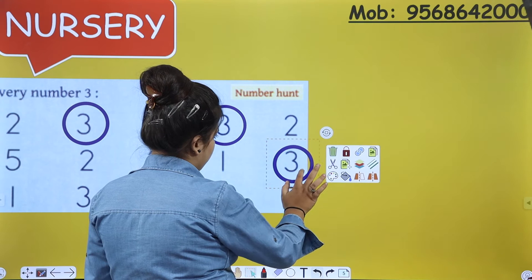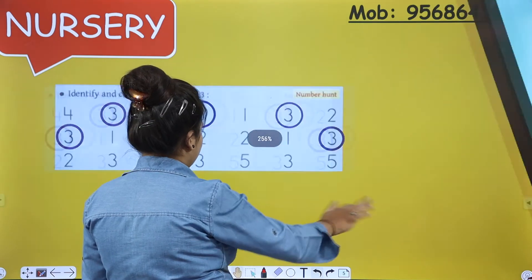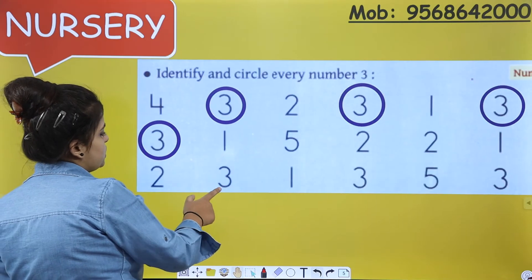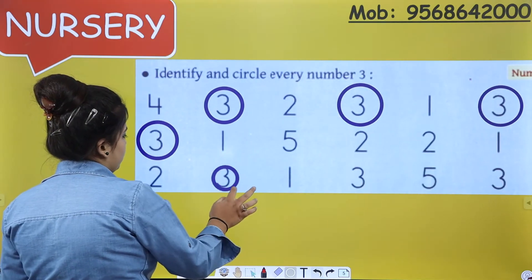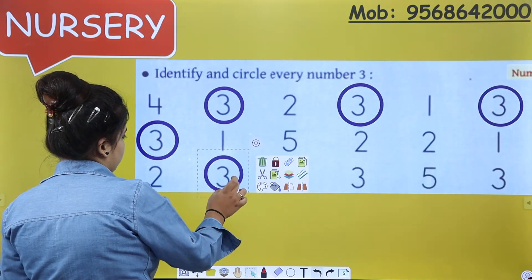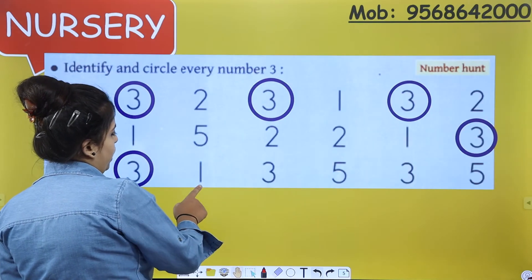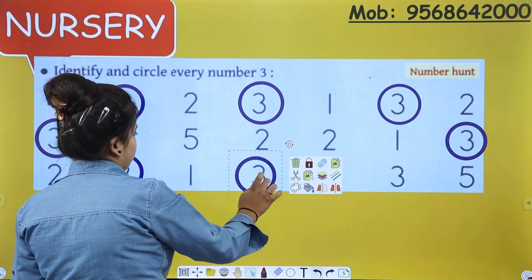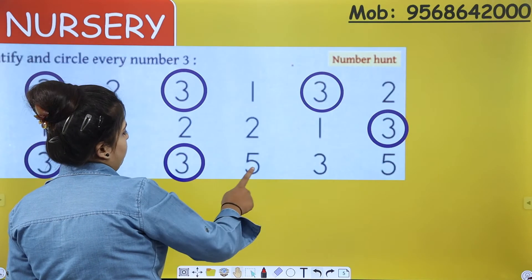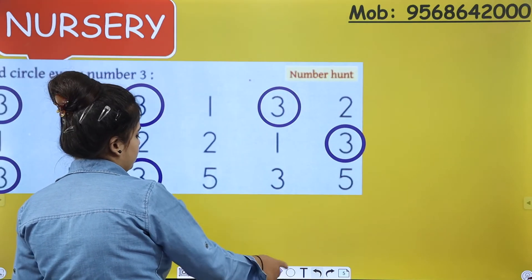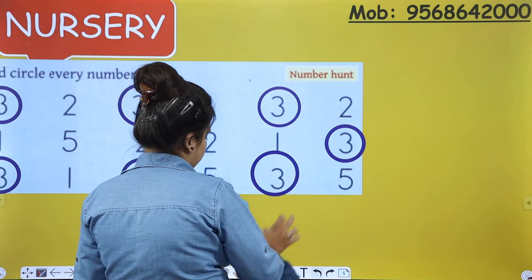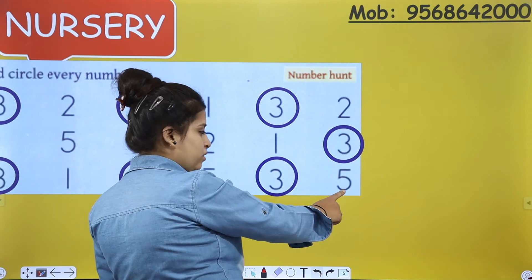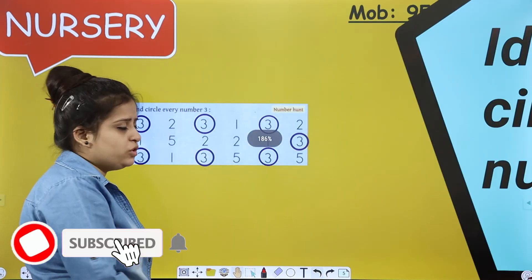Circle the number 3 anywhere you find it. This is number 2. This is number 3. 3, 3. Next: 1, 3. And again: 3, 3. Again: 5. So there is no more number 3 here now.